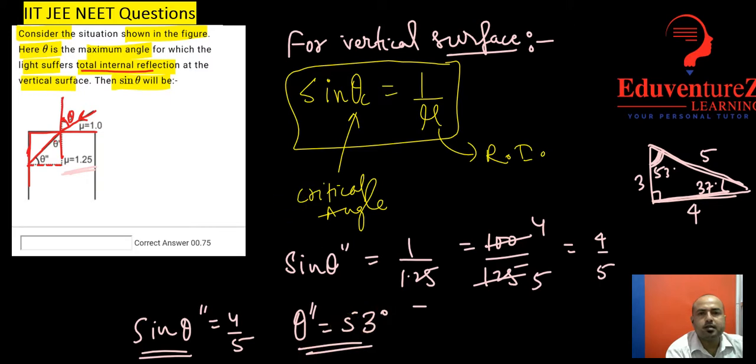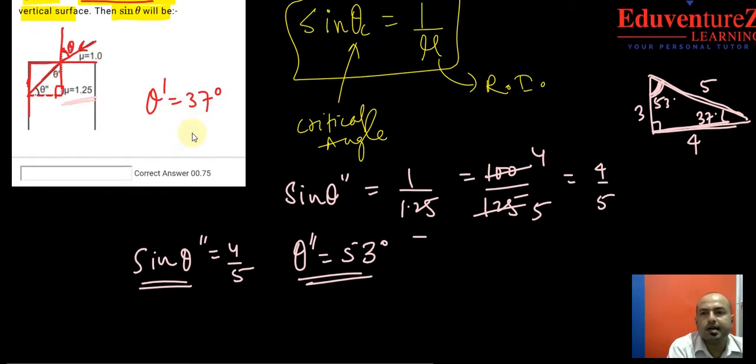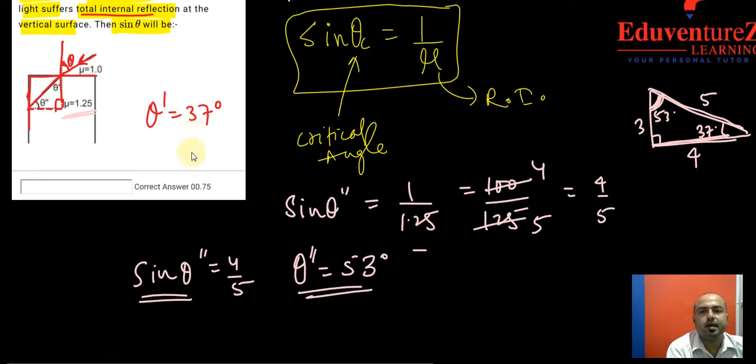If theta double dash is 53 degree, then this is 90, so theta dash will be equals to 37 degree. Now, as we know the value of theta dash, we can calculate theta by applying Snell's law at the horizontal surface.